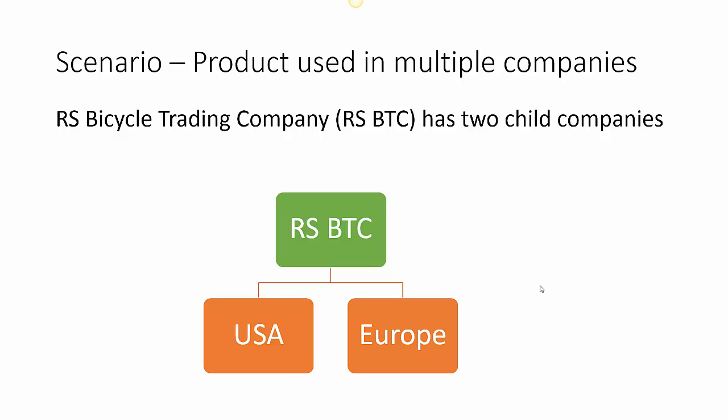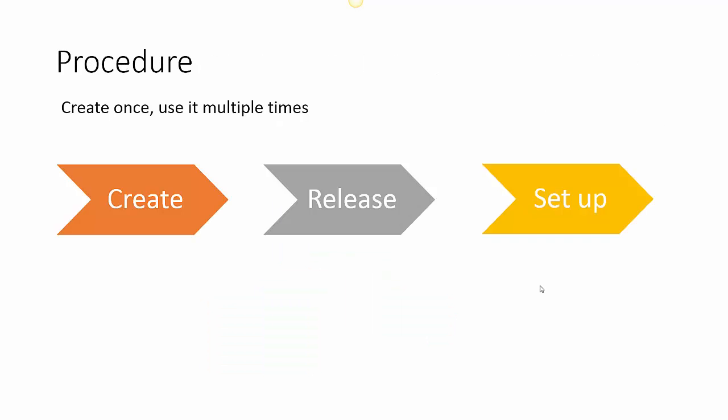For example, few products are only sold or purchased in India. RS Bicycle Trading Company has two subsidiaries, one in USA and one in Europe. They are selling bicycles in the US and Europe region. There are few bicycles which are popular in both USA and Europe. When a product is used across multiple legal entities, we may create the product definition first and then reuse it. There are three simple steps: create, release, and setup.